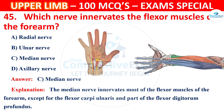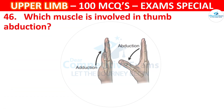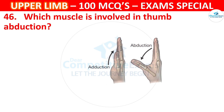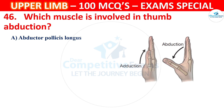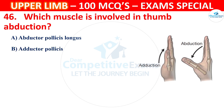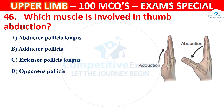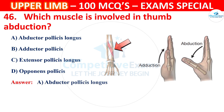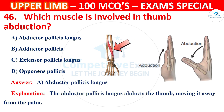Question number 46: Which muscle is involved in thumb abduction? Options: pollicis longus, abductor pollicis longus, extensor pollicis longus, or opponens pollicis. The correct answer is A, abductor pollicis longus. The abductor pollicis longus abducts the thumb, moving it away from the palm.